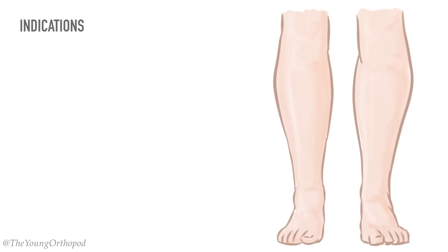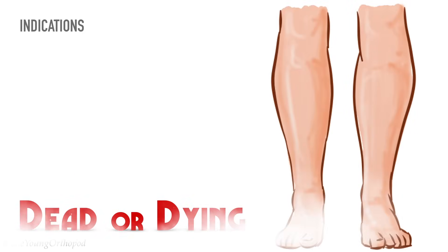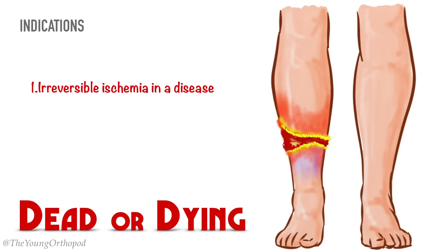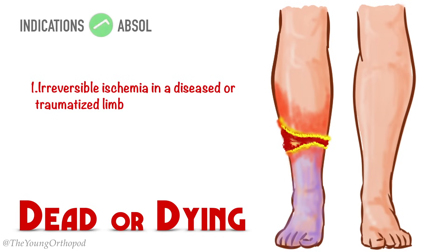Surgical amputation of an extremity should be viewed as a first step towards a more productive life, rather than a failure to save the limb. The only absolute indication for primary amputation is an established irreversible ischemia in a diseased or traumatized limb — basically a dead limb.